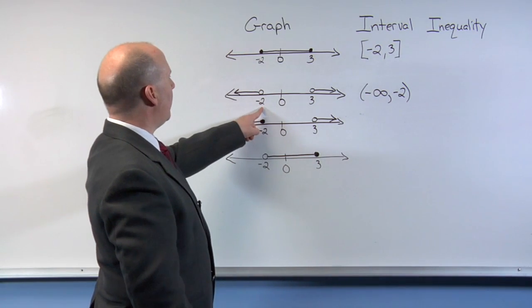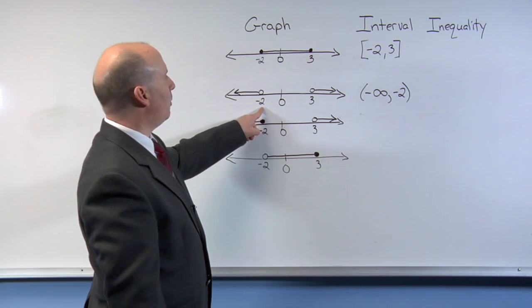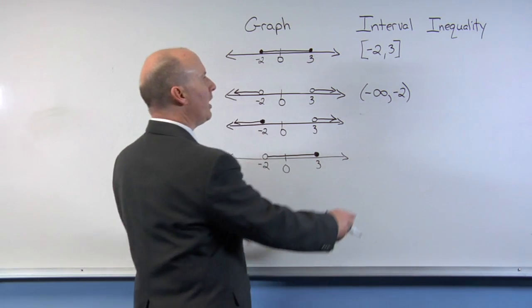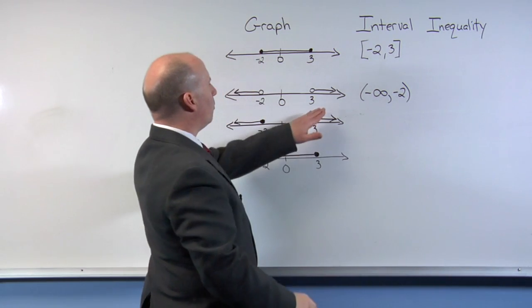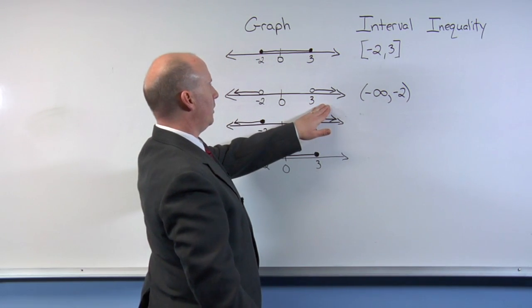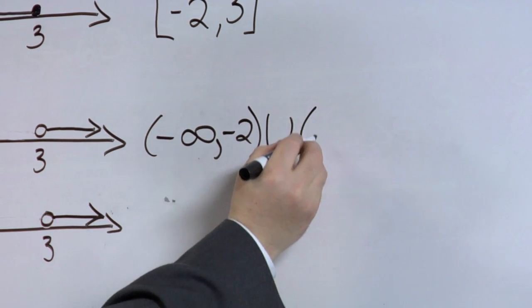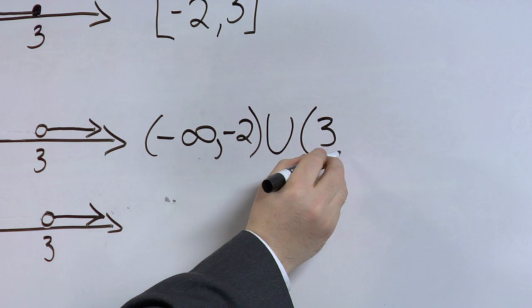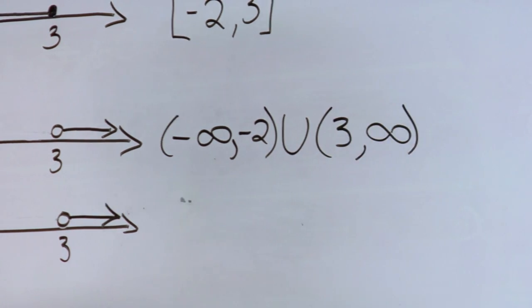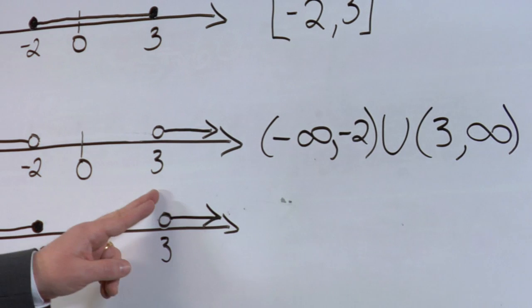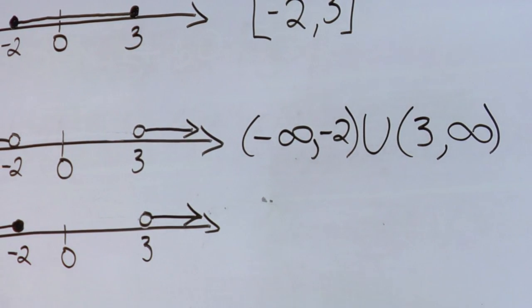And notice I had a parenthesis for negative 2 because negative 2 is not included, and the parenthesis shows that it's not included. We also have another part over here, which is separate, so we're going to use the U, standing for union, and include 3, comma, positive infinity, because it's not including 3 and it's going continuously to the right direction.